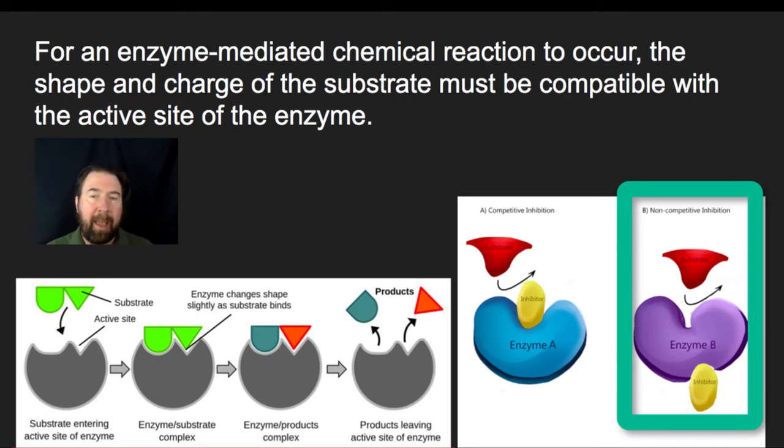As it binds, it has an allosteric effect on the overall shape of the protein. It actually changes the shape, closing off that active site. We refer to this as a non-competitive inhibitor. It's not binding in the active site and preventing the substrate from binding, but by binding somewhere else on the protein, it's altering the shape of the active site and having an equal inhibition as with competitive inhibitor.